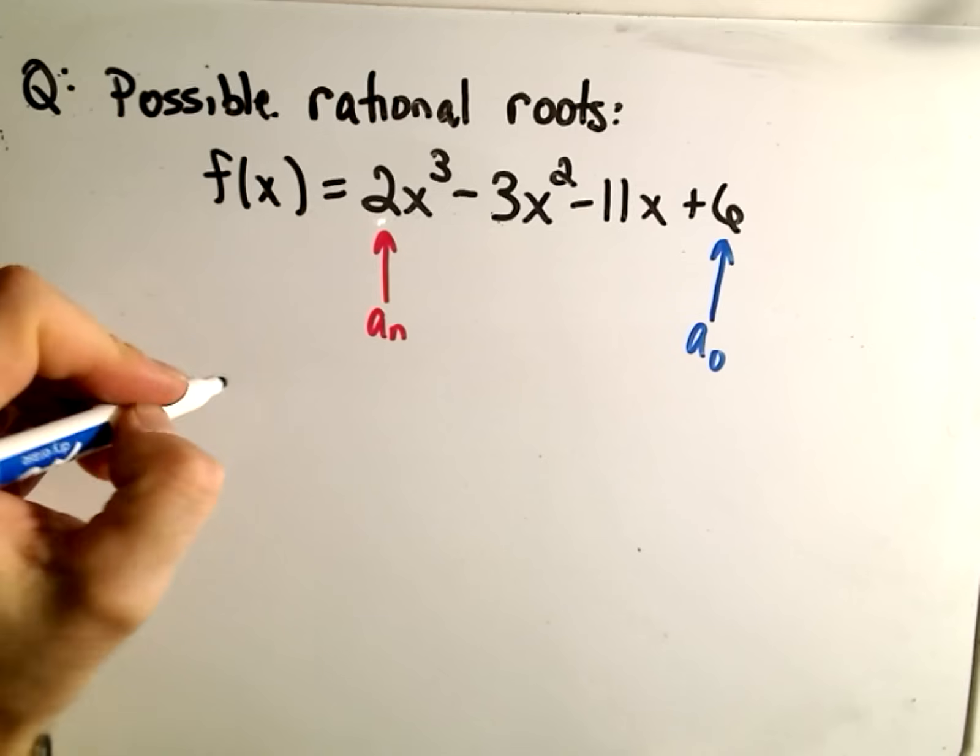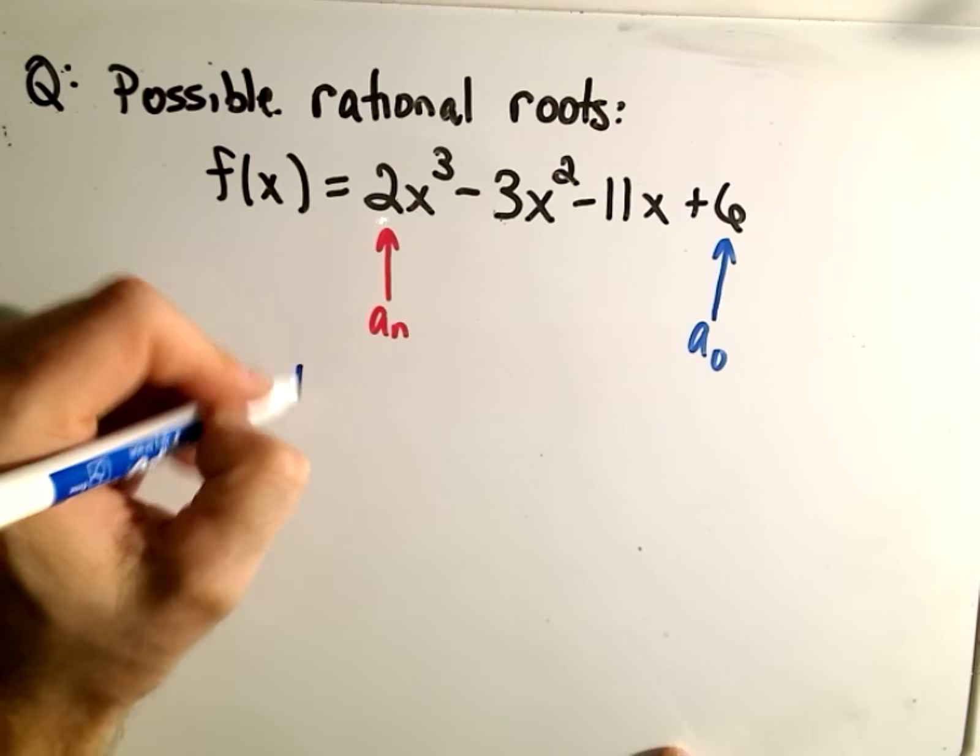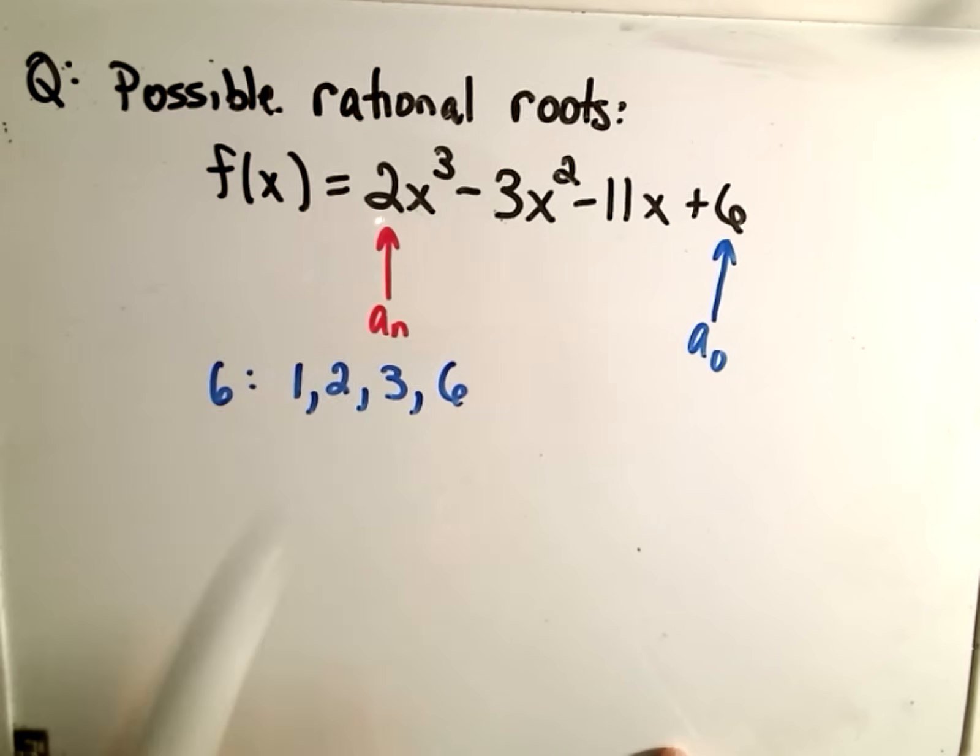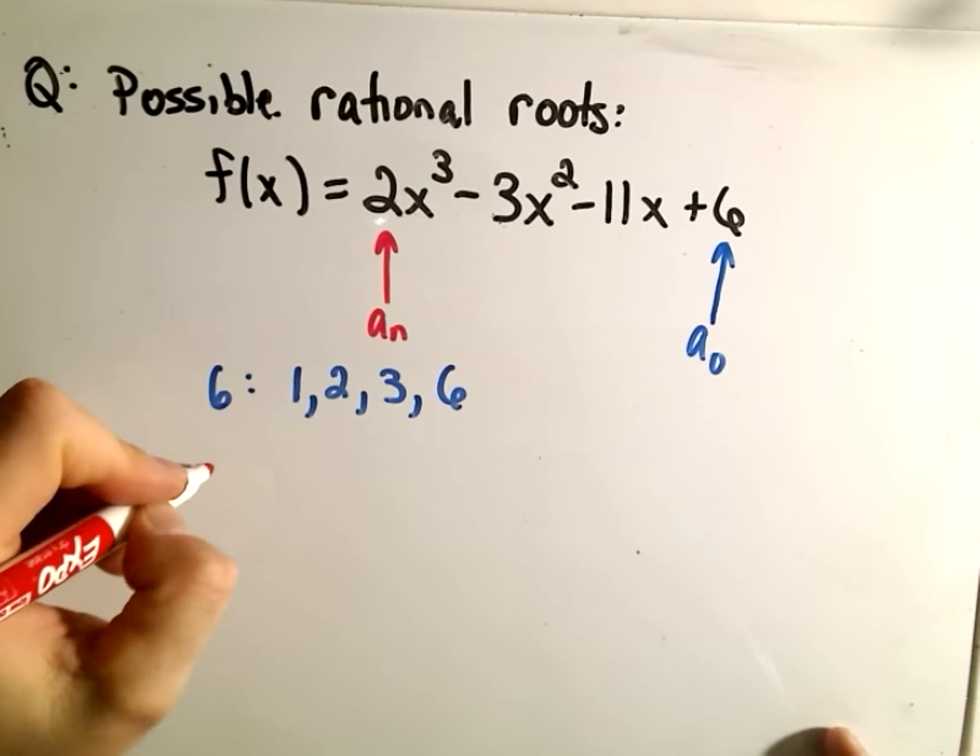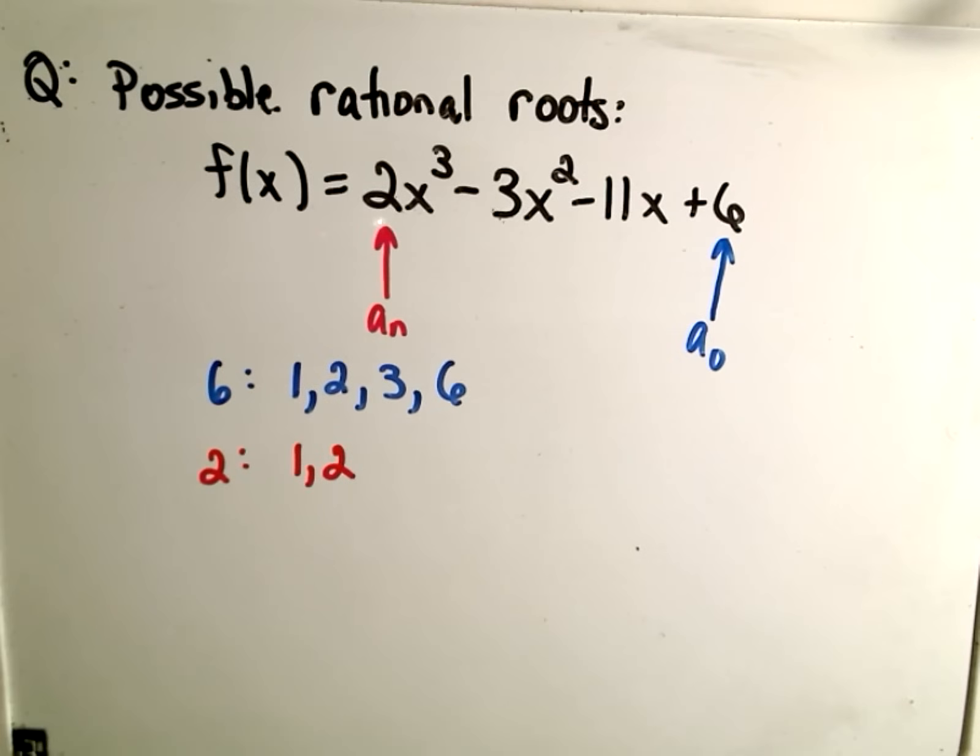If you think about factors of 6, factors of 6 we have 1, 2, 3, and 6. And then our factors of 2, that's pretty easy, our factors of 2 are just 1 and 2. And now what we do is look at the possible rational roots.